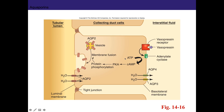Vasopressin travels through the circulatory system to the epithelial cells of the collecting duct. It's a peptide hormone that binds to a Gs-coupled metabotropic receptor, increases cyclic AMP, stimulates PKA, and causes protein phosphorylation and membrane fusion of aquaporin-2 water channels, which get inserted into the apical membrane. Aquaporin-3 and -4 are always constitutively in the basolateral membrane; vasopressin controls the inducible aquaporin-2 channels in the apical membrane.